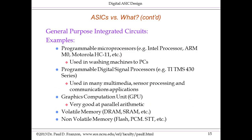In contrast, general purpose integrated circuits are designed to be software programmable so they can perform any function compatible with the level of performance they can achieve. The obvious example are microprocessors, all the way from high-end processors for servers through to processors in washing machines to perform the rudimentary functions needed within.